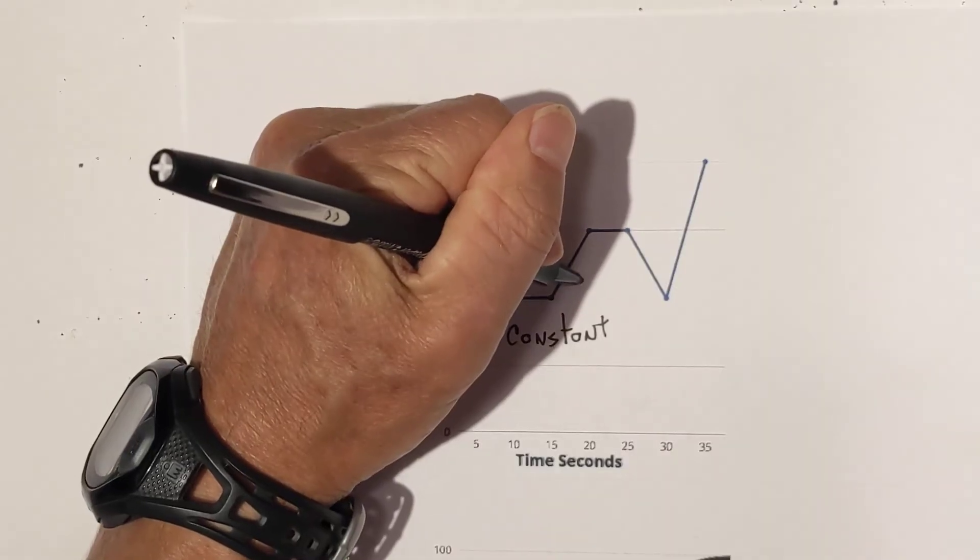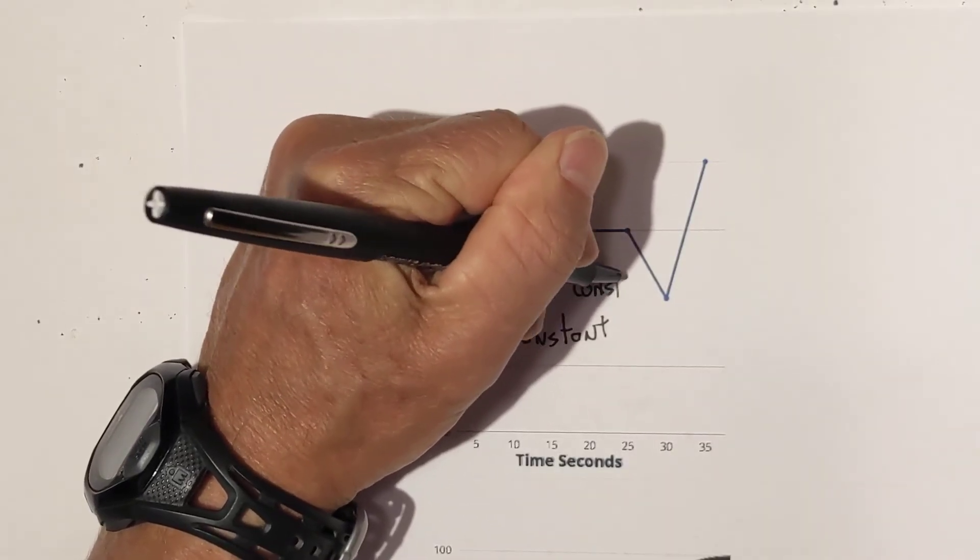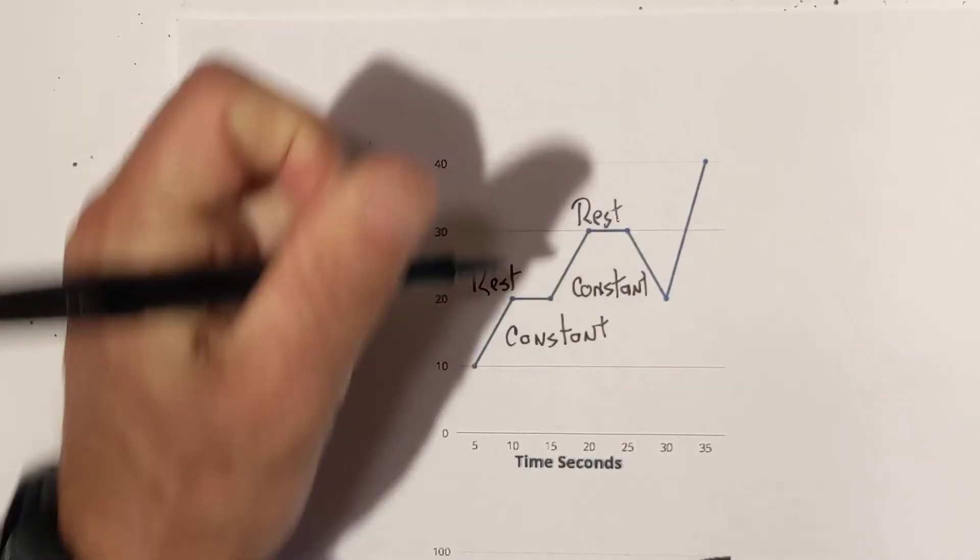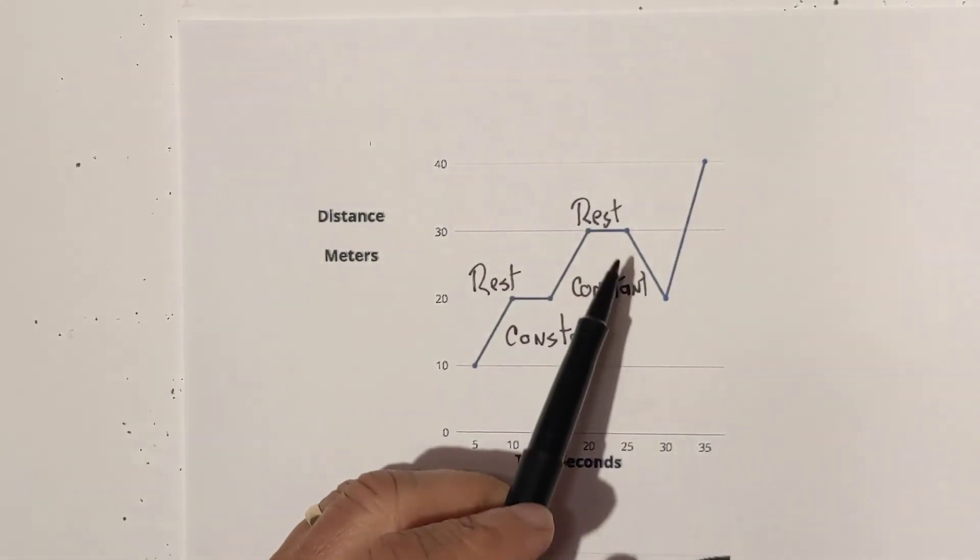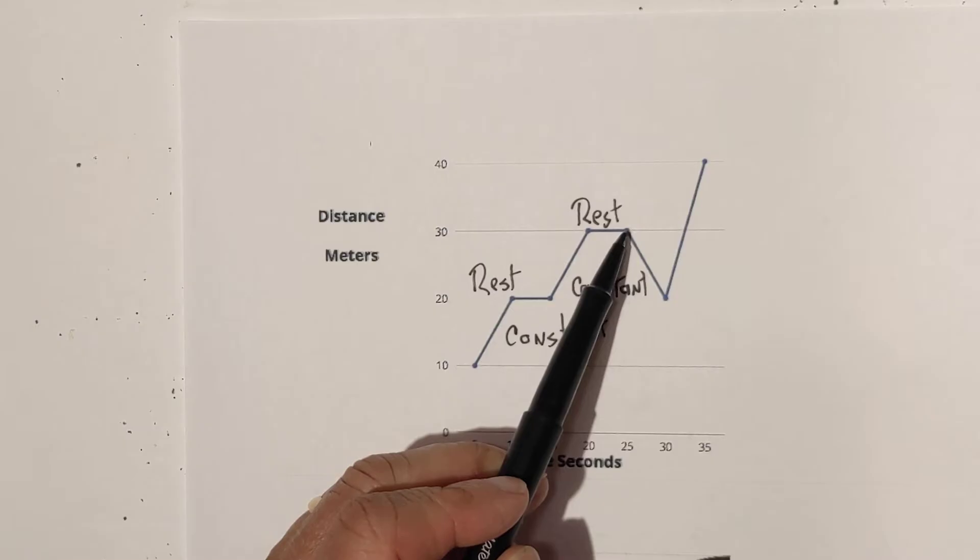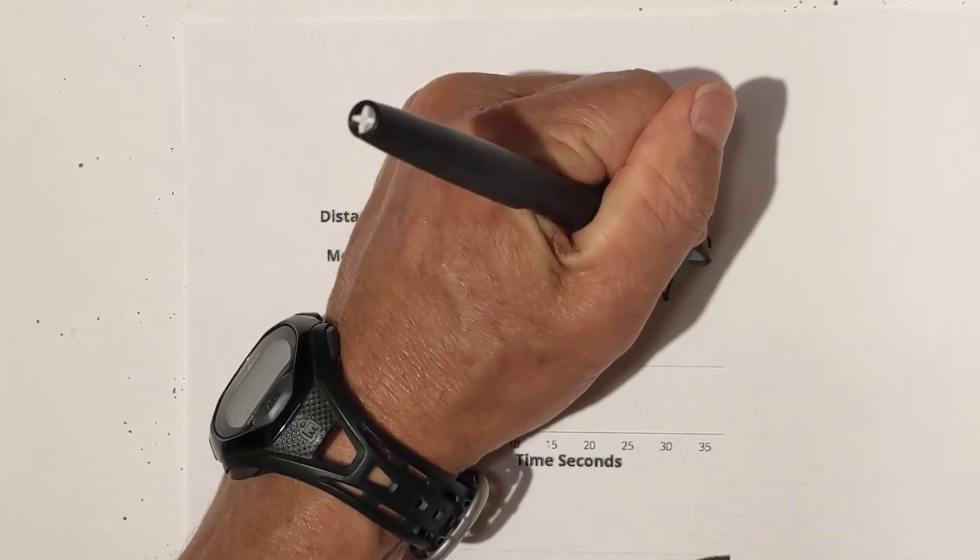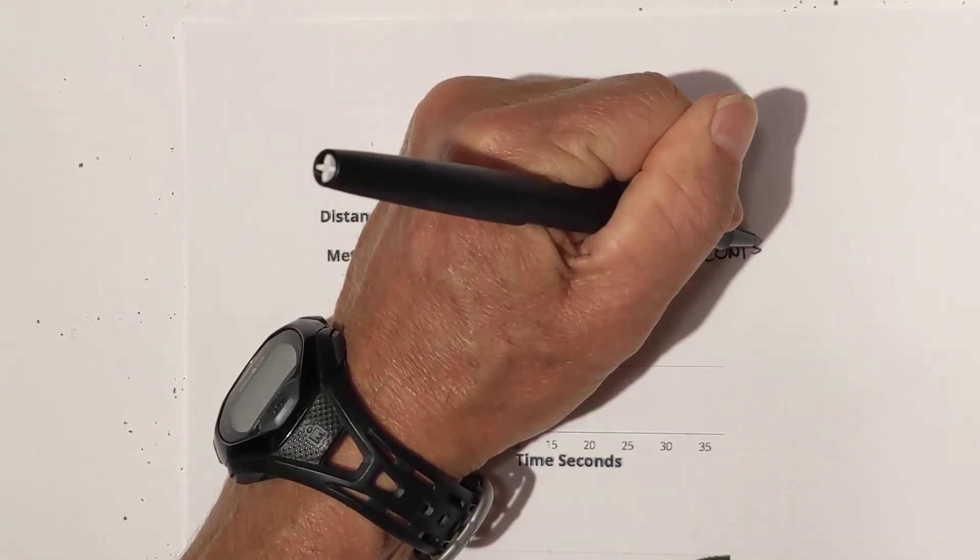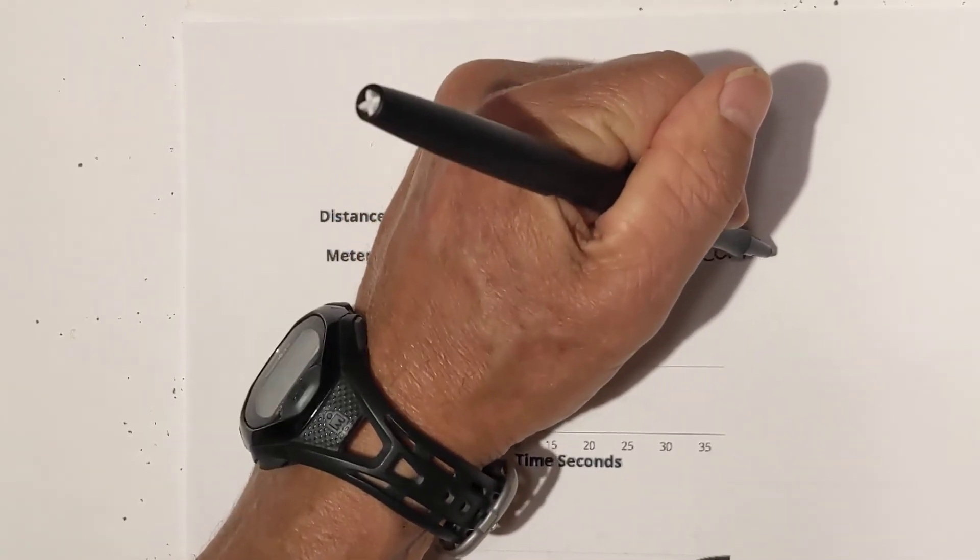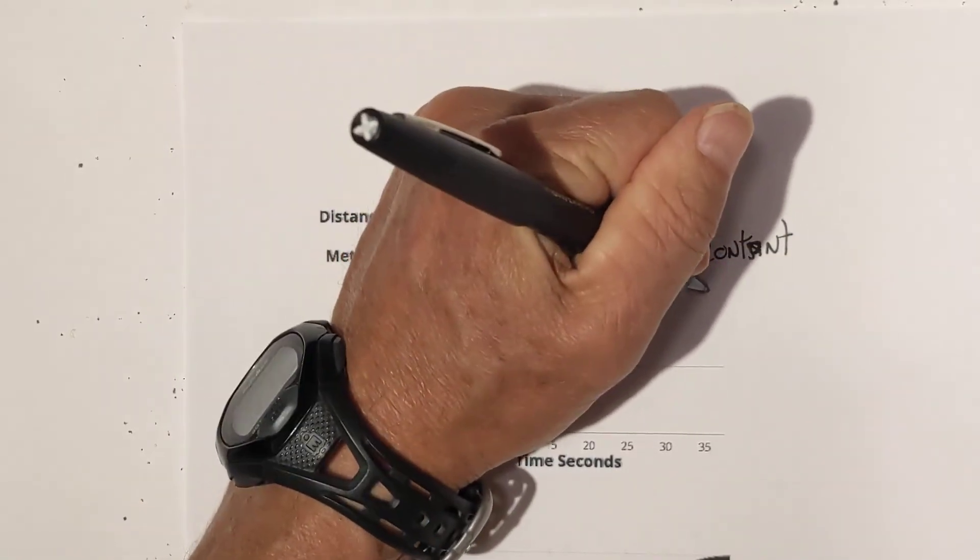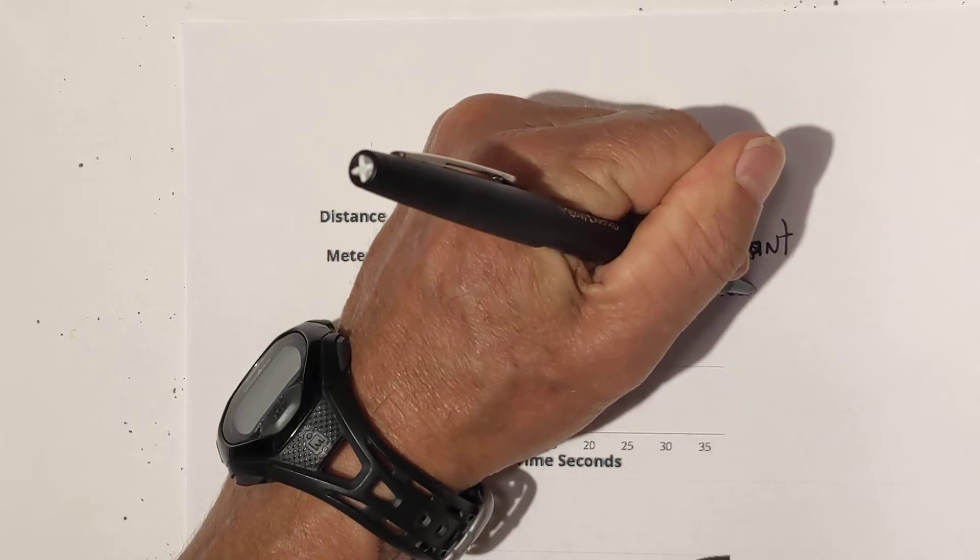Then here, we have another constant. Then we have rest. Now, what is going on right here? Notice that the beginning point is 30 and you end up at 20. So, you are going at a constant rate of speed, but you're going in reverse.